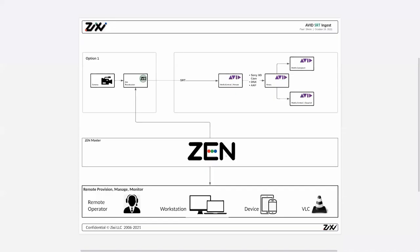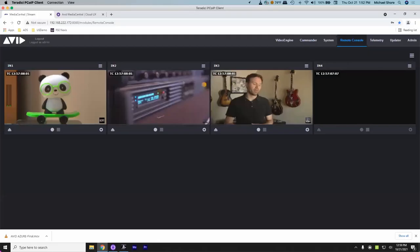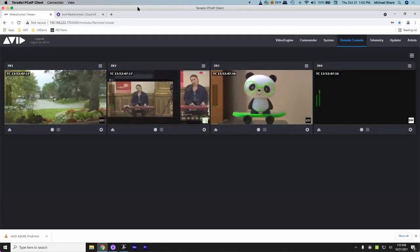Mike shows the Media Central Stream side receiving the Zixi SRT feed. This demonstrates that contribution can come from any Zixi-enabled device sending SRT — directly into Media Central Stream or through the Broadcaster — supporting news contribution, remote live production, and 24x7 linear channel ingest over IP.